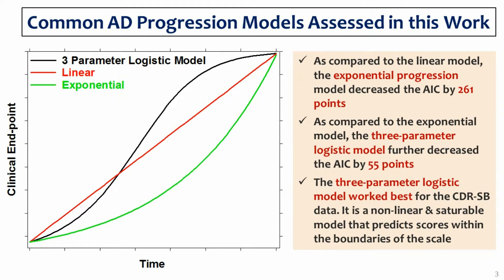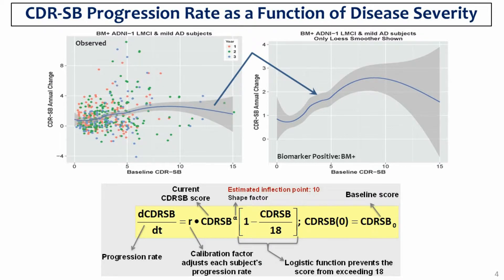This analysis indicated that the three-parameter logistic model best described the CDRSB data. A plot of progression rate versus disease severity suggests that the rate of progression is slower at low and high CDRSB scores, with mid-range scores of about 10 exhibiting faster rates of deterioration. This inverted U-shape relationship is a characteristic of an S-shaped progression curve described by the three-parameter logistic model, which is also highlighted here.